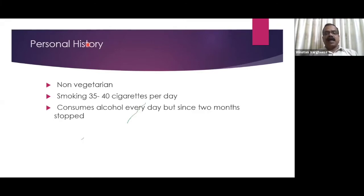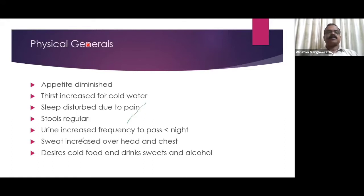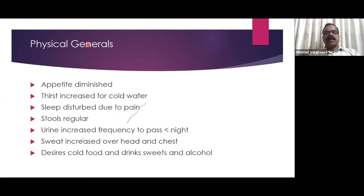Personal history: he was a non-vegetarian, smoking 35–45 cigarettes per day and consuming alcohol daily, though he had stopped two months prior. Physical generals: appetite diminished, thirst increased for cold water, sleep disturbed due to pain, stools regular, urine frequency increased especially at night, and increased sweating over the head and chest. He desired cold food, drink, sweets, and alcohol.